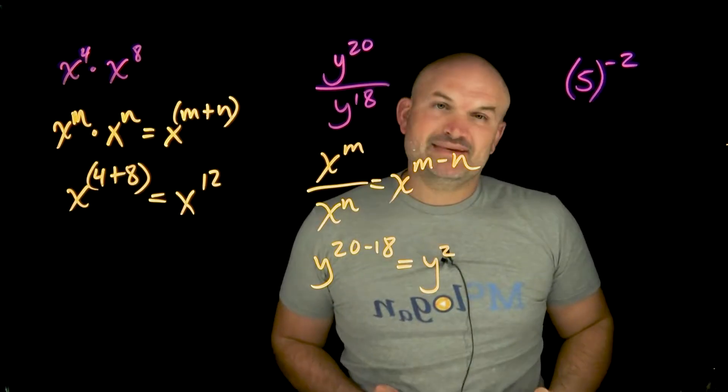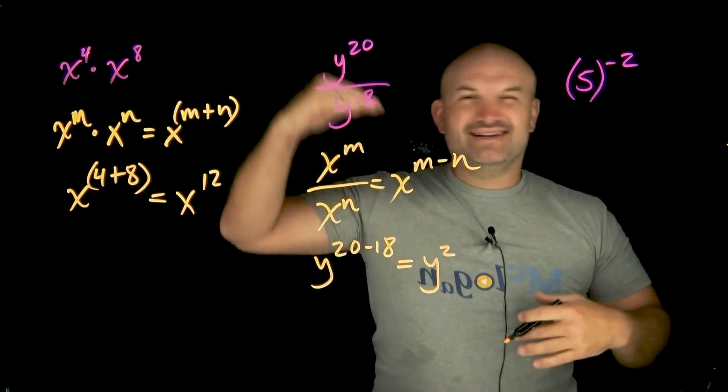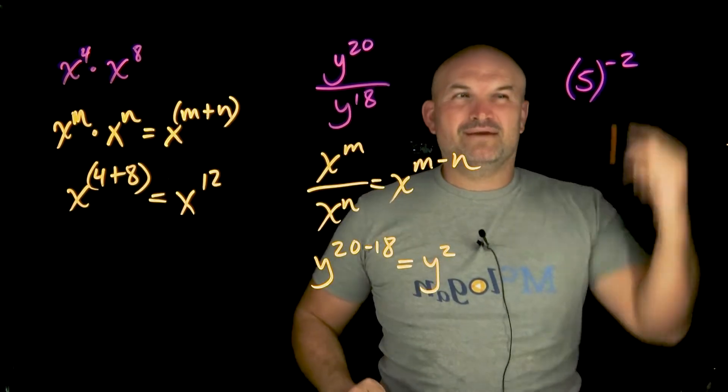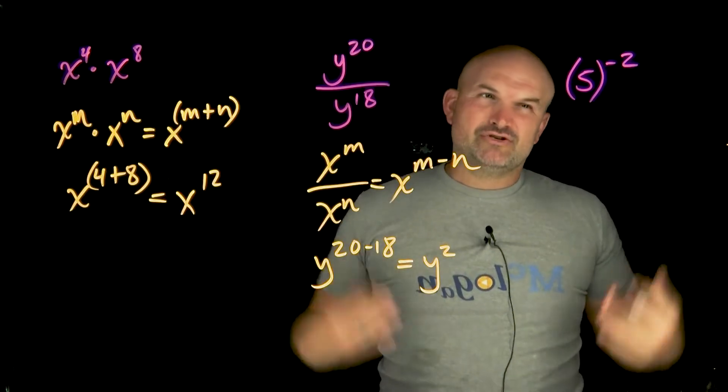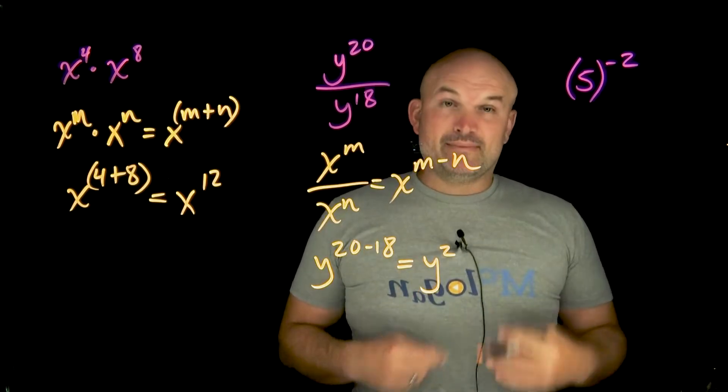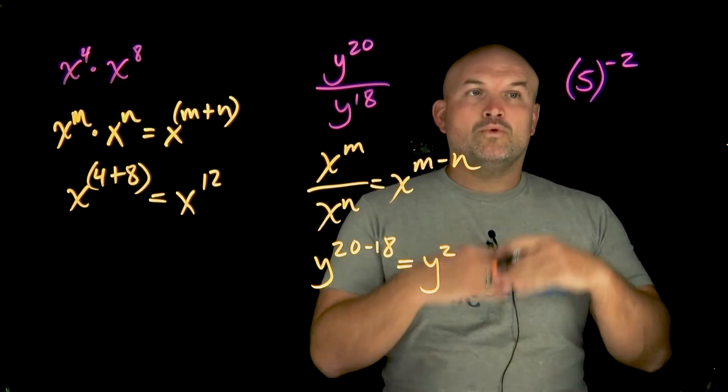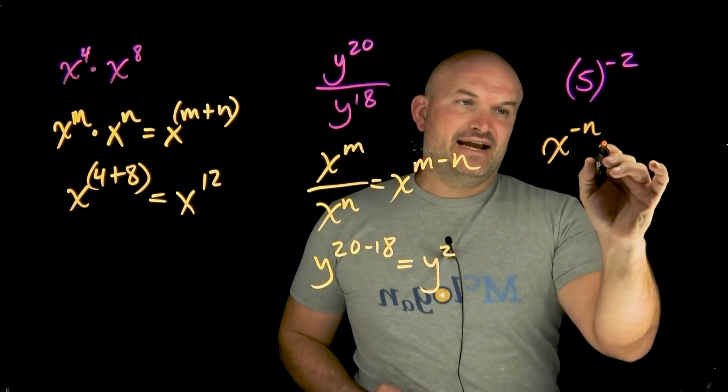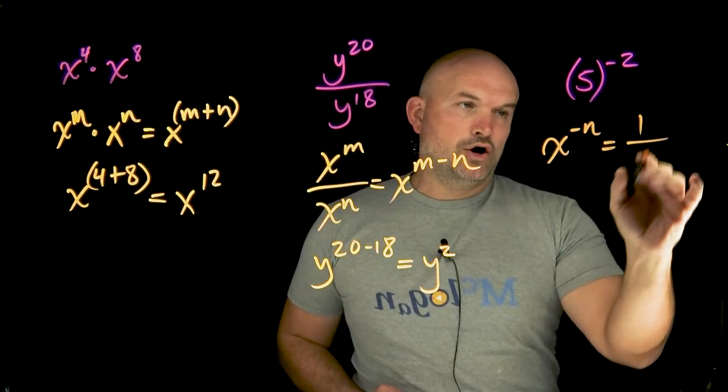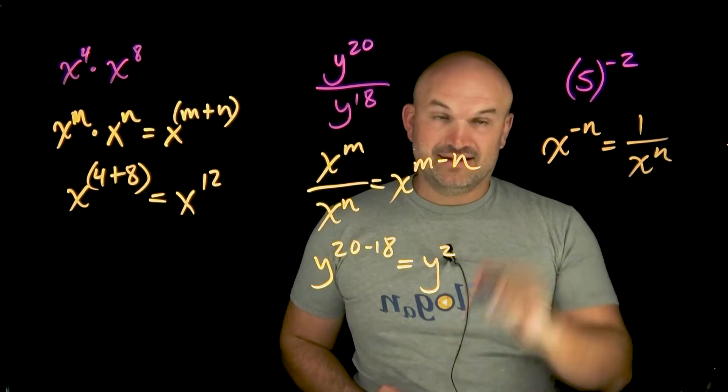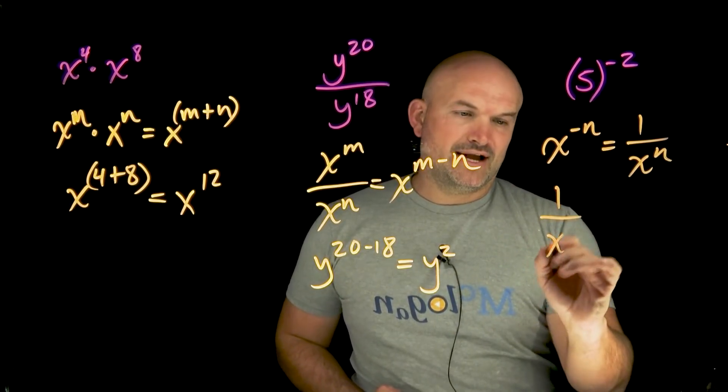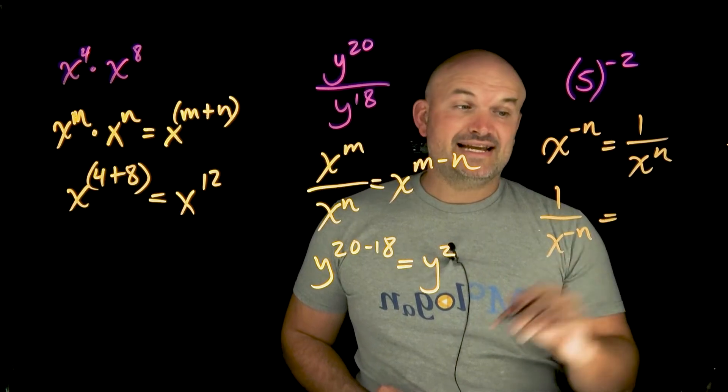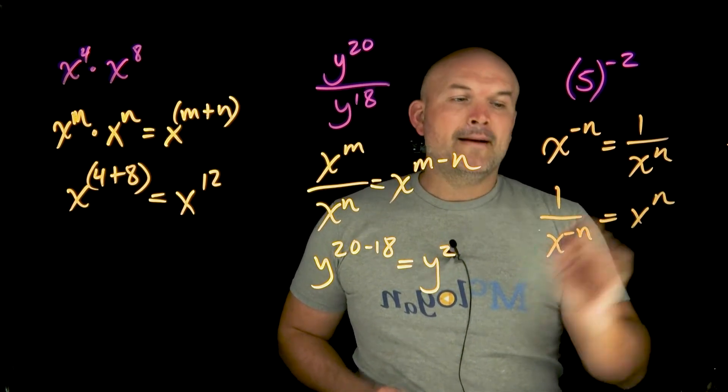The next one is negative powers. These first two are very important and most students remember them, but negative powers always seem to trick students up. Just remember, negative powers represent reciprocals. If you have x to the negative n, that equals one over x to the positive n. If you have one over x to the negative n, that equals x to the positive n.